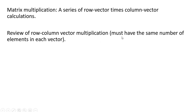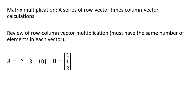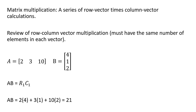First, in order to do this multiplication you must have the same number of elements in each vector. Here we have a row vector with three elements and a column vector with three elements, so we are able to multiply them. We can think of it as R subscript 1 times C subscript 1, where R subscript 1 is the first row of the lead matrix and C subscript 1 is the first column of the lag matrix. The calculation is 2 times 4 plus 3 times 1 plus 10 times 2, and we get an answer of 21.